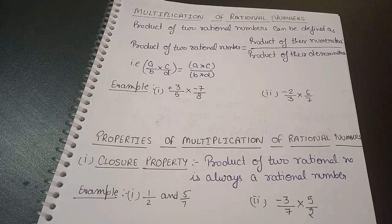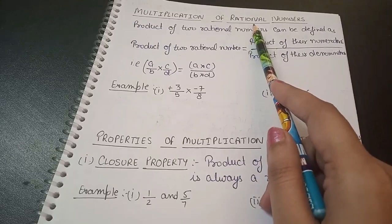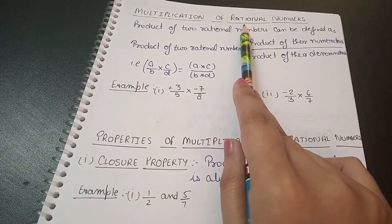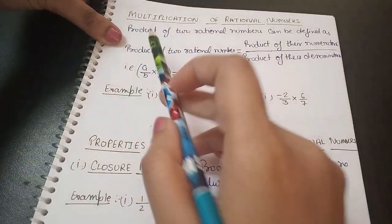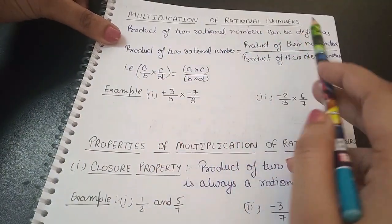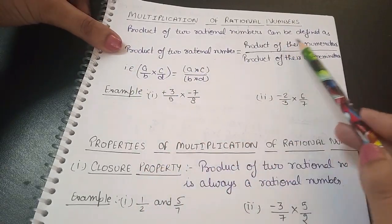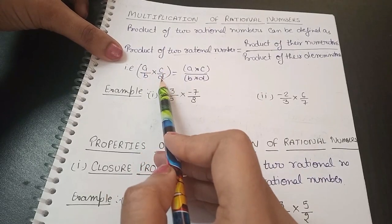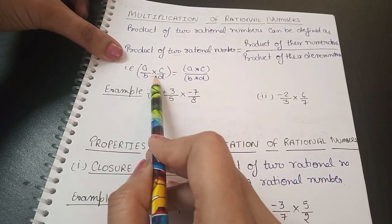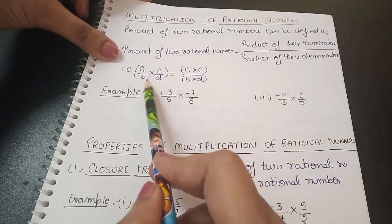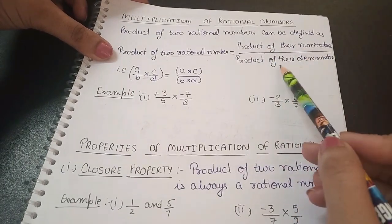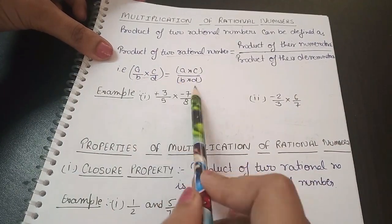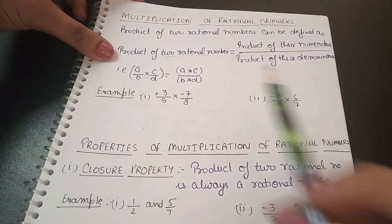Today's topic is multiplication of rational numbers. We have two rational numbers and we have to multiply them. The product of two rational numbers can be defined as the product of their numerators divided by the product of their denominators. So if we have two rational numbers a/b and c/d, we multiply their numerators together and their denominators together.